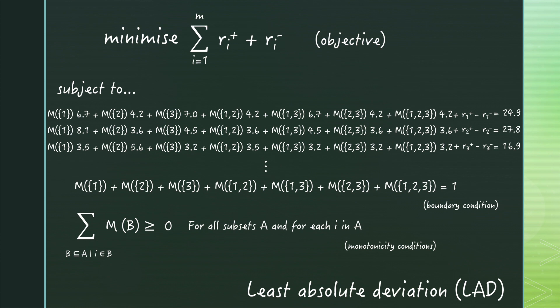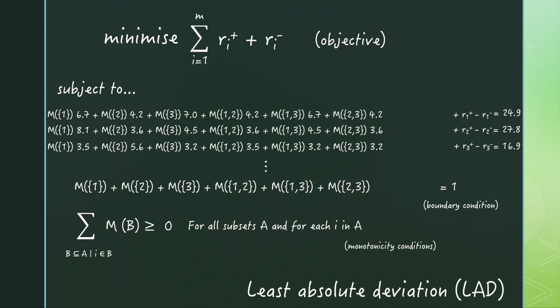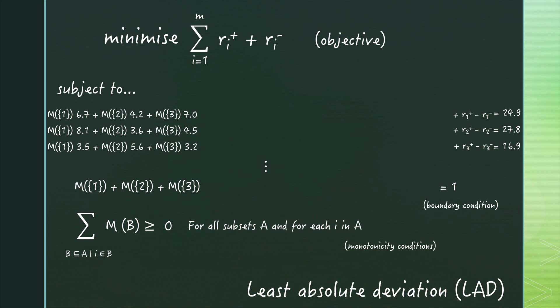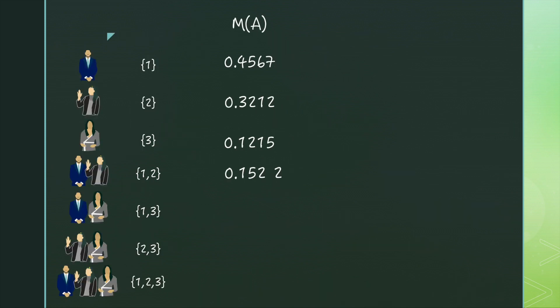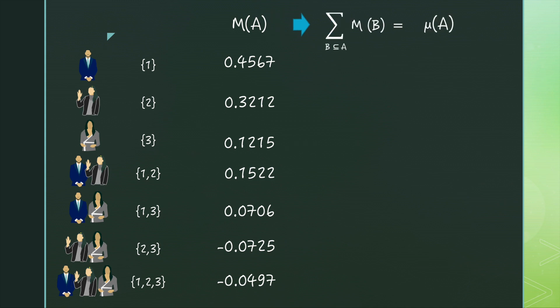In terms of reducing the number of variables, we can limit the size of coalitions we consider. In Möbius representation, a value of zero is often interpreted as indicating no contribution in terms of interaction in that group. Simply leaving groups out of our problem means we're only accounting for interaction in smaller groups. Using a linear solver, we obtain the Möbius weights that minimize the least absolute deviations, which we can then convert back into our standard format.